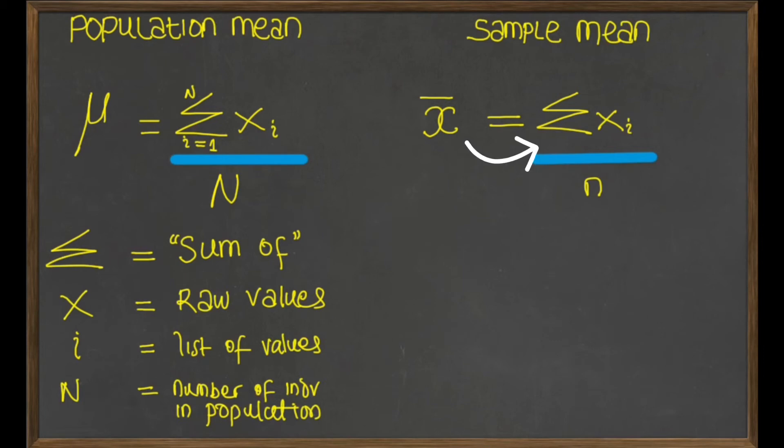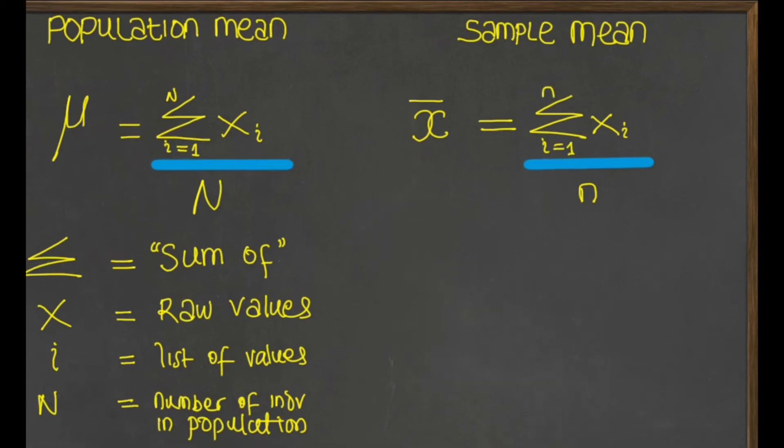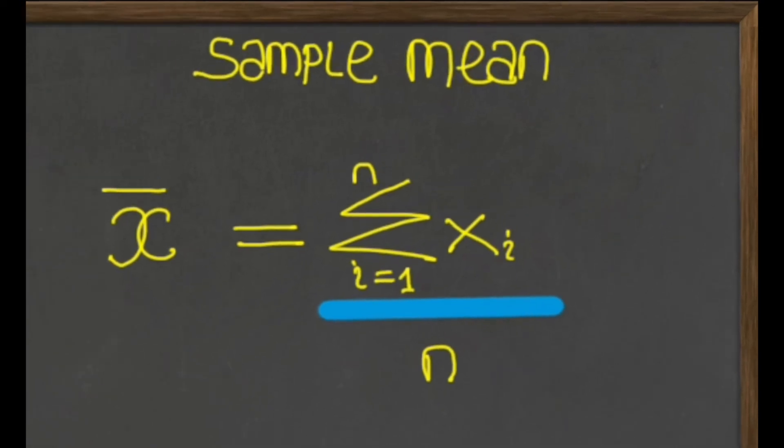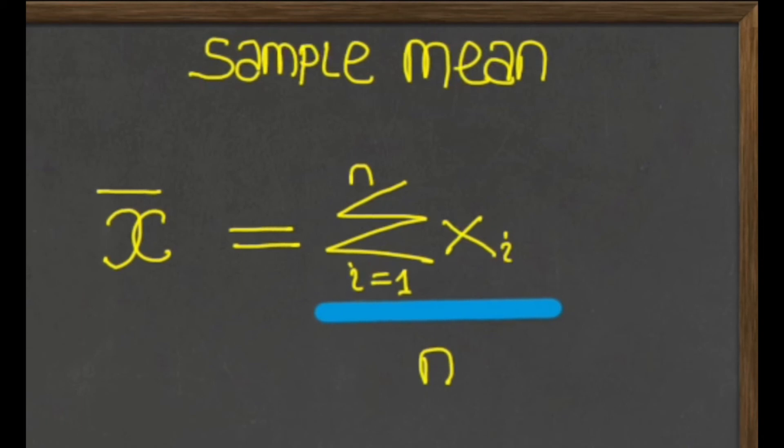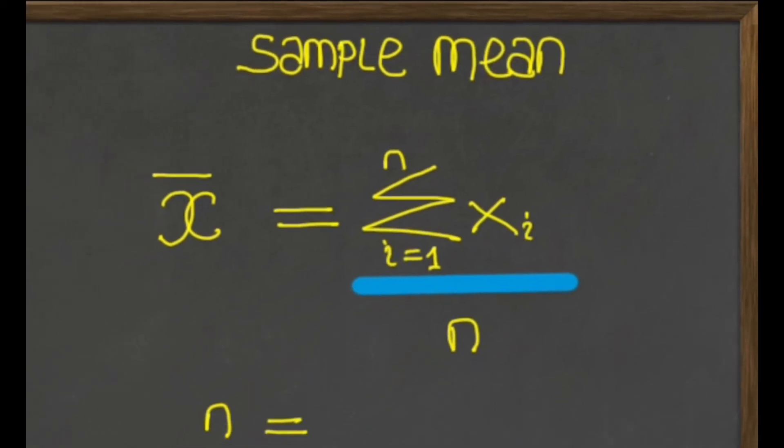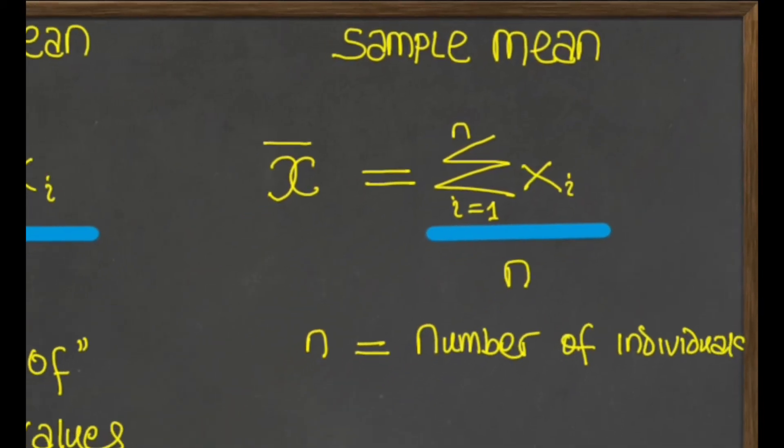So here too, under the sigma, we write the range of values of x from position 1 to the last position, which is equal to the number of individuals, which is the lowercase n. Essentially here, what we are saying is the sum of all the values of the list of height values, x subscript i, from the first in the list, which is i equals to 1, all the way to the last value in the list, which is equal to lowercase n. And this is divided by the number of individuals in the sample, denoted as n.